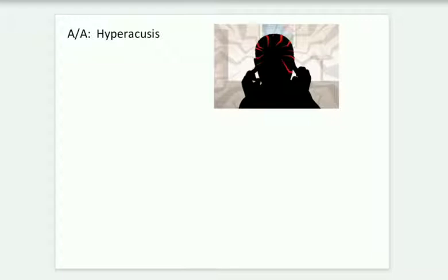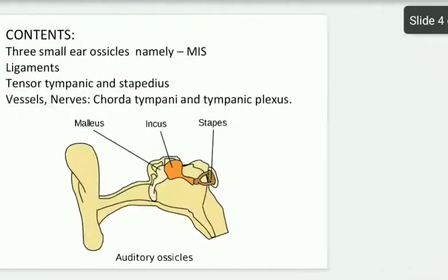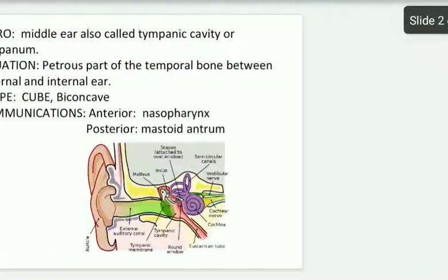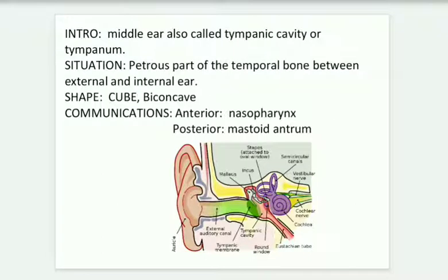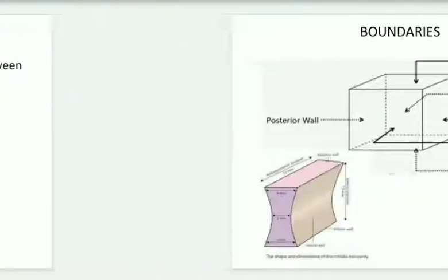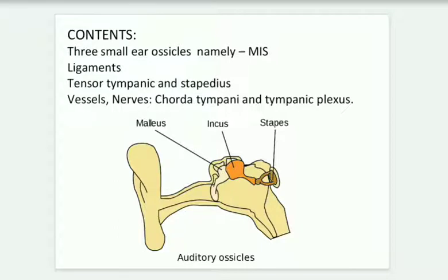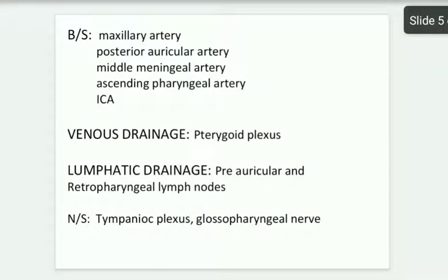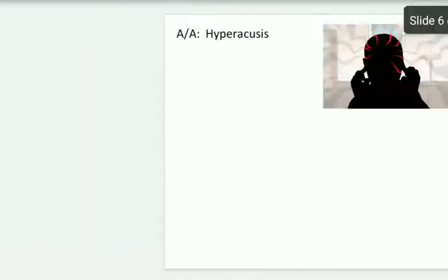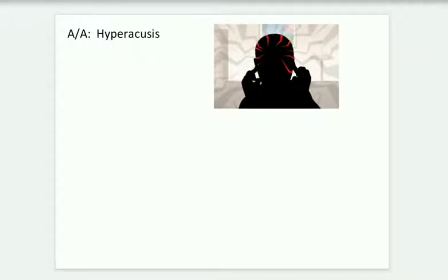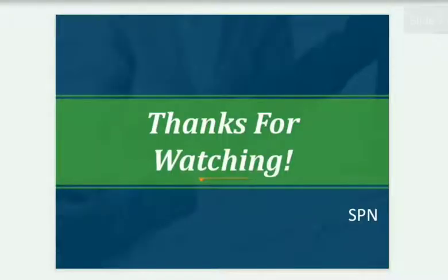To revise, the side headings for the middle ear are: introduction, situation, shape, and connections; boundaries and dimensions of the middle ear cavity; contents including the malleus, incus, and stapes; blood supply, venous drainage, lymphatic drainage, and nerve supply; and finally applied anatomy. Thanks for watching.